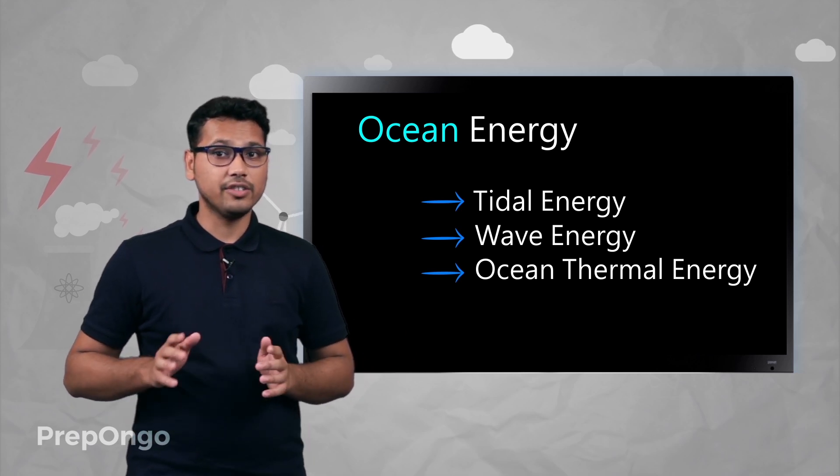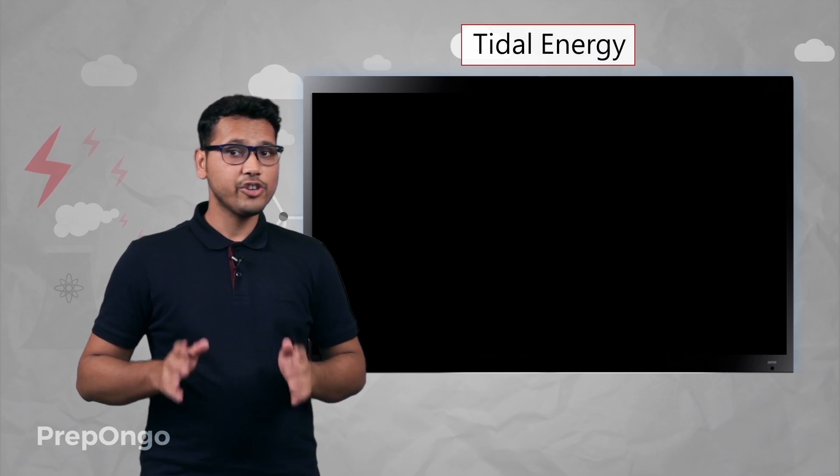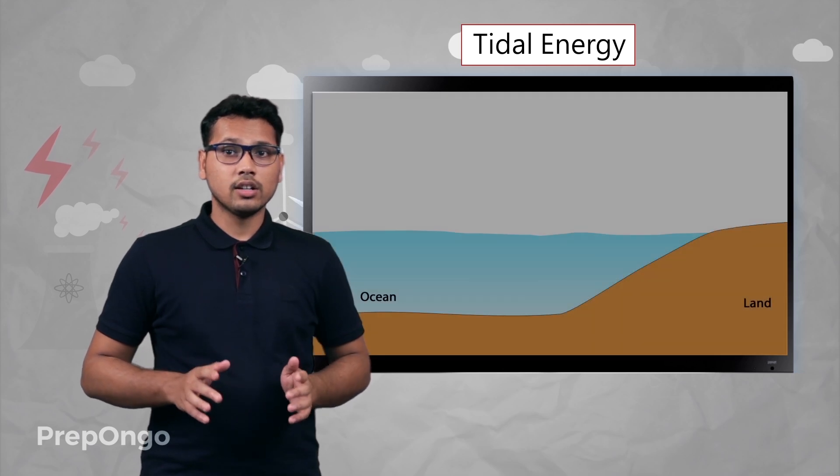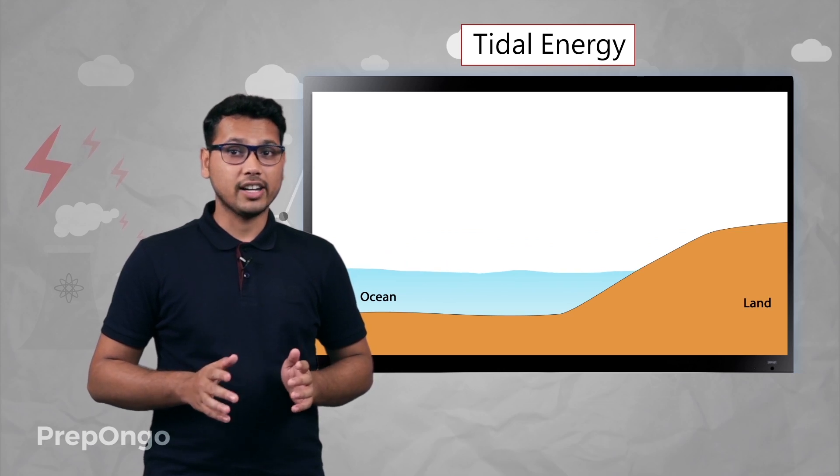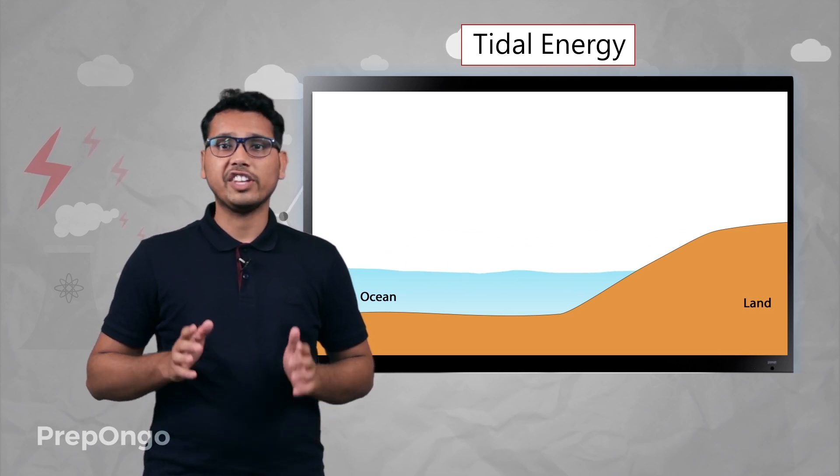Now let's learn first about tidal energy. Some of you who have been to the beaches might have noticed that at some time of the day, water in the ocean starts receding from the shore and it recedes around 10 to 15 meters.